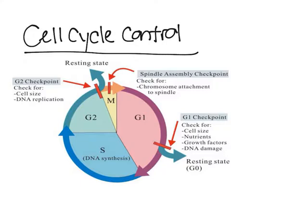Let's start at the G2 checkpoint. What occurs at the G2 checkpoint is that it checks if DNA is replicated correctly. Because the S phase is the phase where DNA is replicated, G2 checks whether DNA replication went properly.